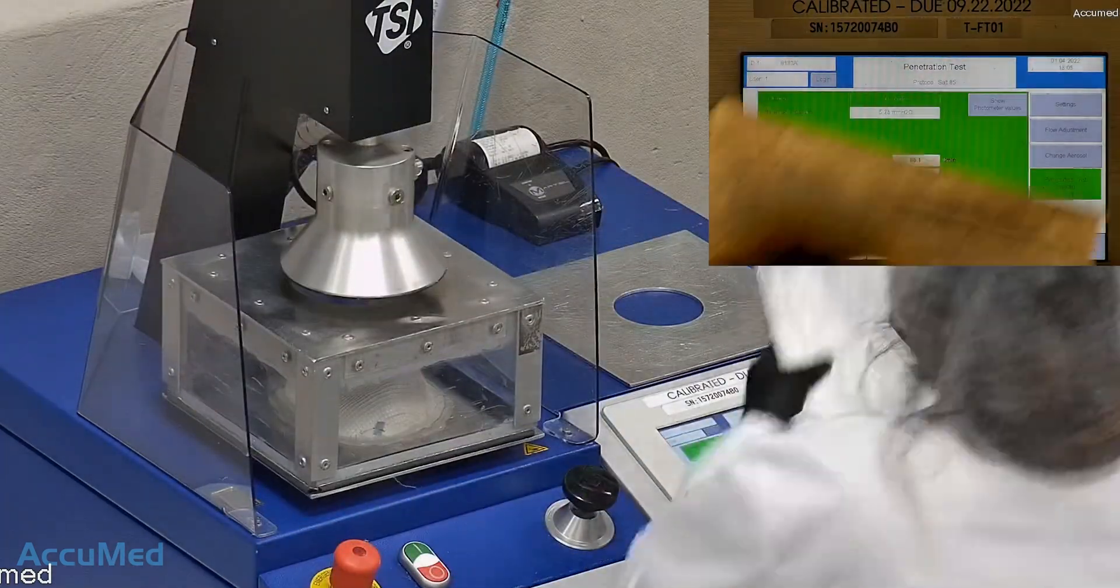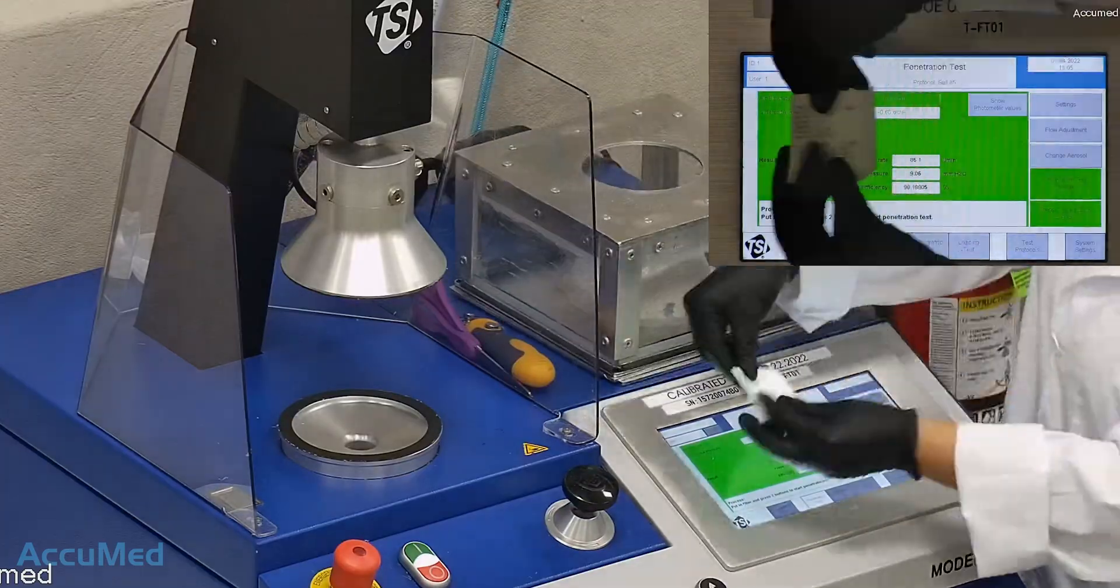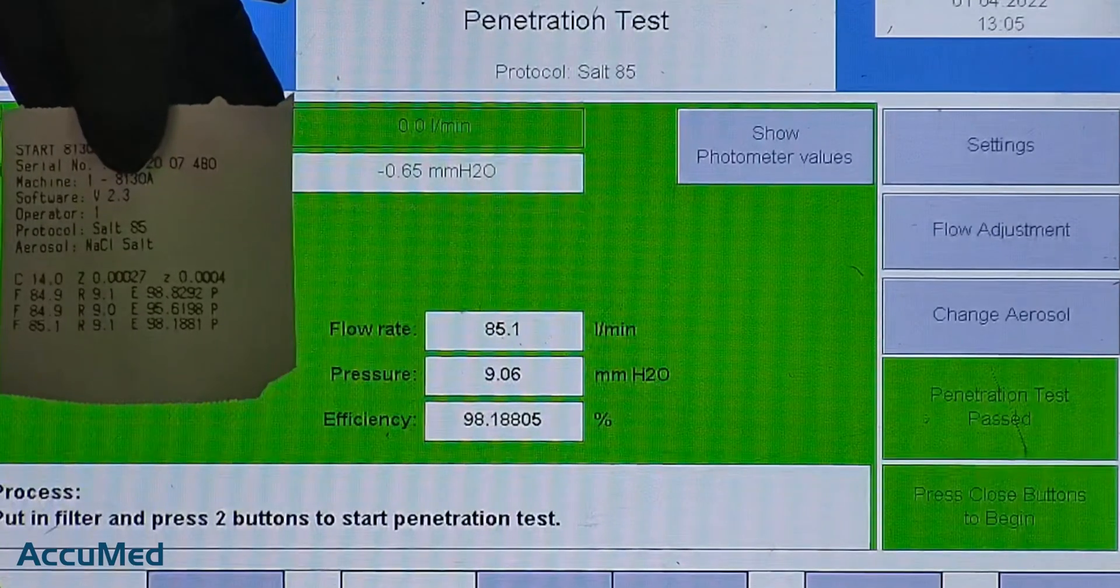Let's go over the results. F stands for air flow rate which we test at 85 liters per minute. R is for resistance, also referred to as pressure drop. This correlates with the breathability. So the lower the number, the more comfortable and breathable the respirator is. E stands for filtration efficiency percentage. As shown, filtration percentage for all three samples was 98.18 or above.